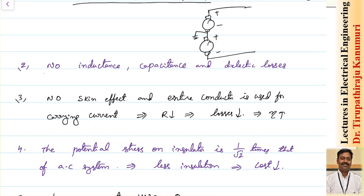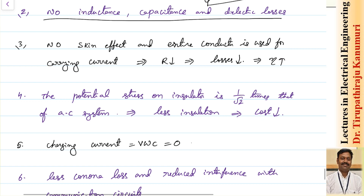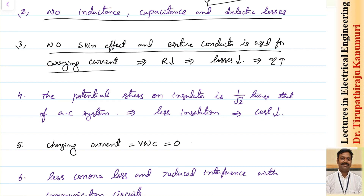Coming to HVDC, there will be no inductance, capacitance, and dielectric losses, because both inductance, capacitance, and dielectric losses depend on frequency — we will discuss these in respective topics. There is no skin effect and the entire conductor is used for carrying current, because skin effect depends on the frequency of the supply. As frequency is equal to zero, skin effect will be zero, so the entire area is used. When entire area is used, R = ρL/A means effective resistance decreases, so losses decrease, thereby efficiency is improved.